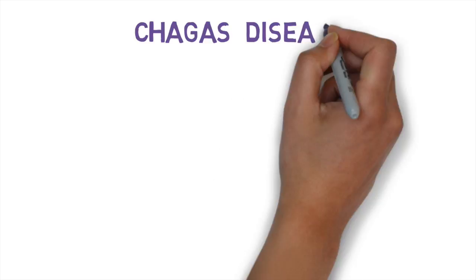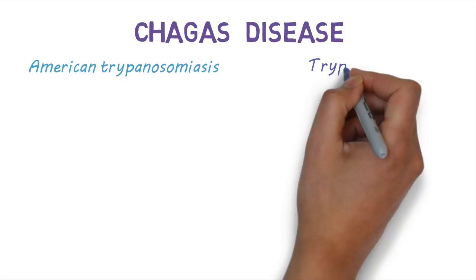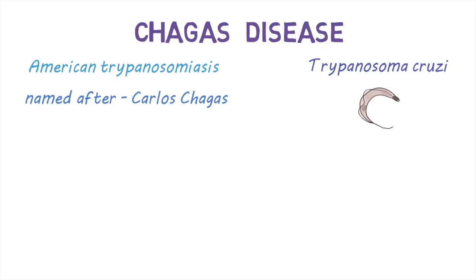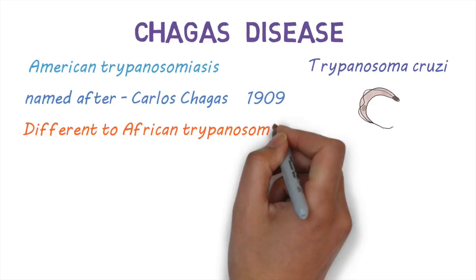Chagas disease, also known as American Trypanosomiasis, is a disease caused by a group of parasites called Trypanosoma cruzi. Chagas disease is named after Carlos Chagas, a Brazilian doctor who first described it in 1909. African Trypanosomiasis is a different disease, caused by Trypanosoma brucei.